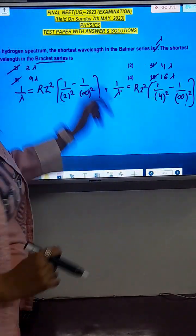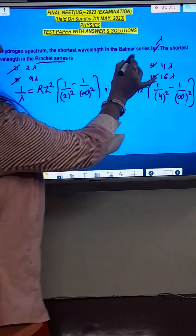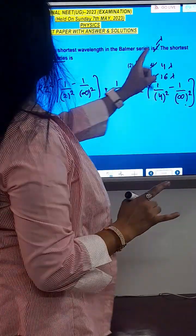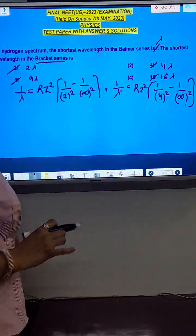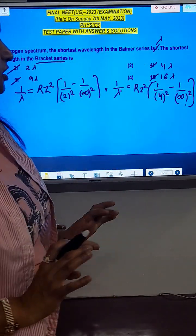In this question, in hydrogen spectrum, the shorter wavelength in Balmer series is lambda. The shortest wavelength in bracket series will be—four options are given.